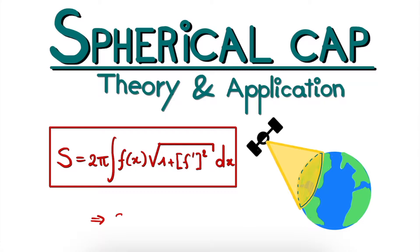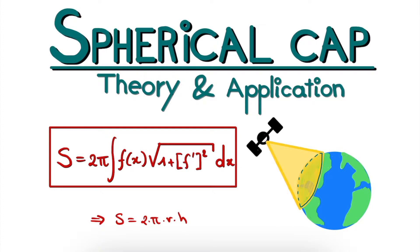It will turn out that this surface can be written as 2 times pi times r times h. And if you're already familiar with this expression, or you simply are not interested in deriving it, you can skip right ahead to the application side of things, where we calculate the proportion of the Earth's surface that you will be able to see when you're hovering a specific height above it. We will compare two scenarios: one where you would be standing in the open ocean, and the other where you would be standing on the summit of Mount Everest. The timestamps for both parts can be found in the comment section below.